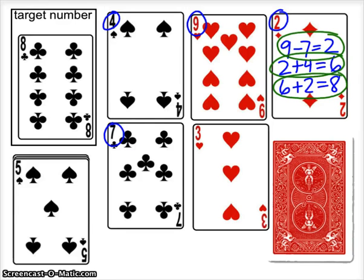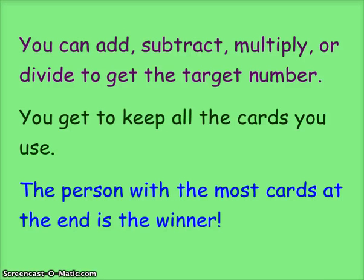Then you flip over a new target number and fill in 4 more cards for the other person to play. You can add, subtract, multiply, or divide to get the target number. You get to keep all the cards you use, and the person with the most cards at the end is the winner.